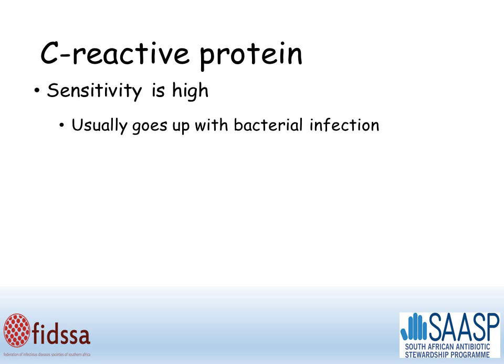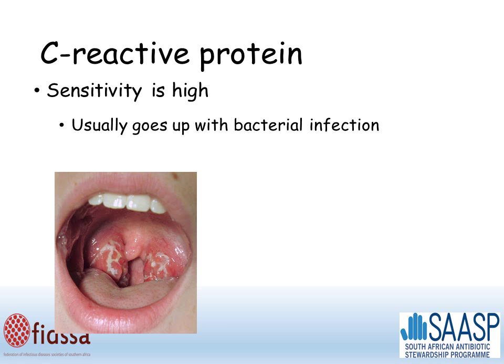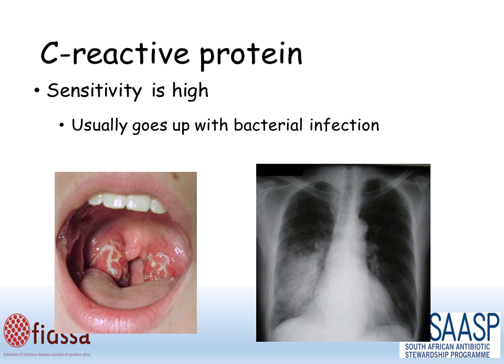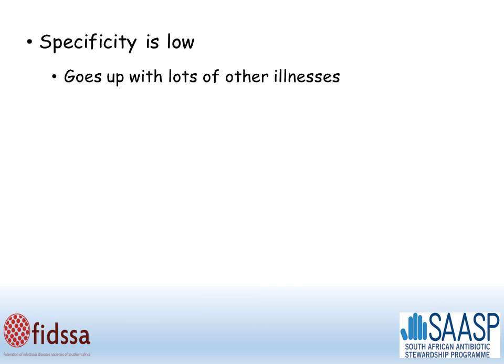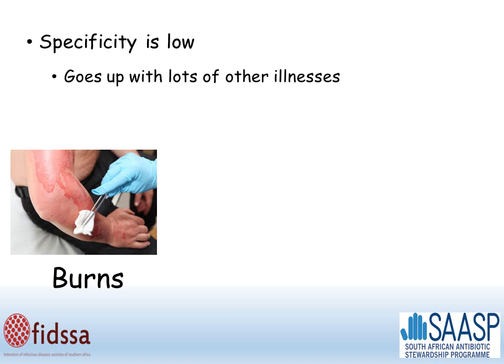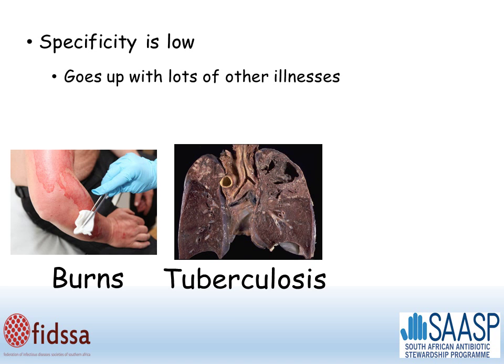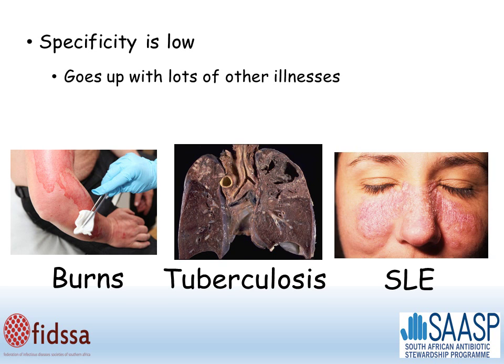Moving on to C-reactive protein. The sensitivity is also high, which means it usually goes up with bacterial infection, as we've seen with white cell count. But the specificity is also low, which means it goes up with lots of other illnesses, such as burns, tuberculosis, and connective tissue disorders such as SLE.